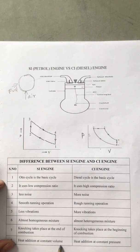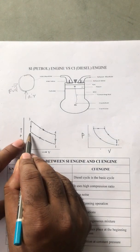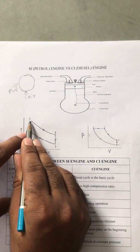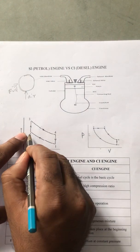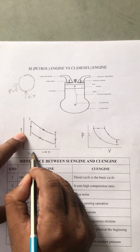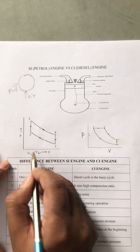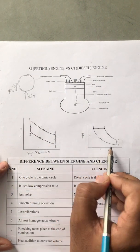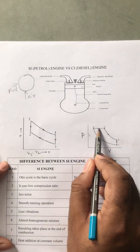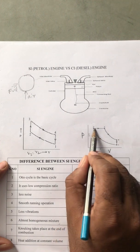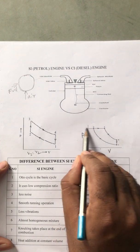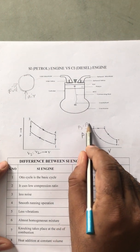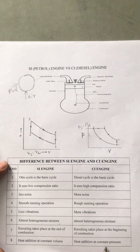Heat addition occurs at constant volume in the SI engine. Observing the PV plot: 1 to 2 is compression, and 2 to 3 is the heat addition process where V3 equals V2 - it takes place at constant volume. In the diesel engine, 1 to 2 is compression and 2 to 3 is a constant pressure process for heat addition, where P2 equals P3 - heat addition is at constant pressure.